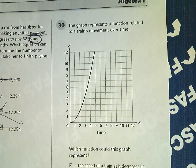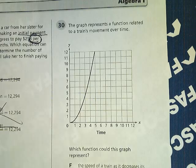Tennessee intercourse practice test, this is question number 30. The graph represents a function related to a train's movement over time. So I need to figure out what the function could represent.